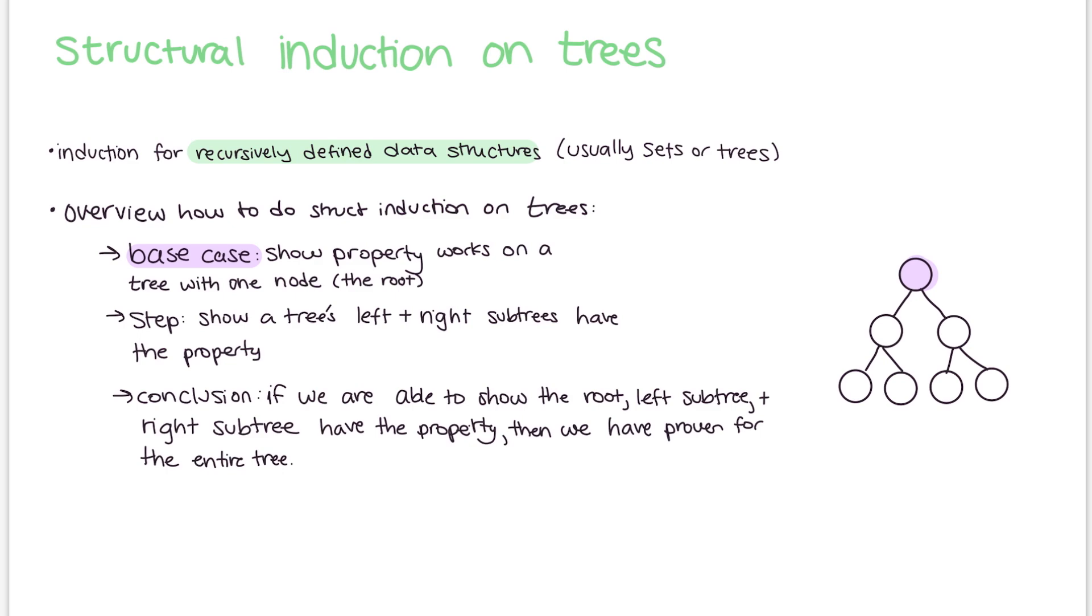Then your step would be to show that it works for the entire tree. What you would do is think about this recursively and look at the left and the right. Because you've proven both the base and the step, and this can be abstractly large, we don't know how big these trees are, but if you've done the step and the base case, then you've proven the property's true for the entire tree, right?